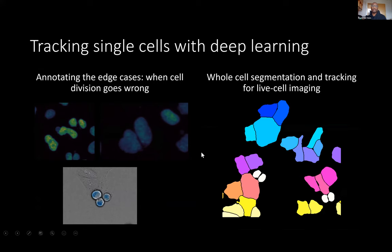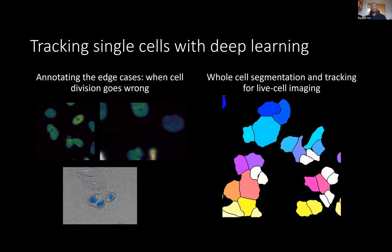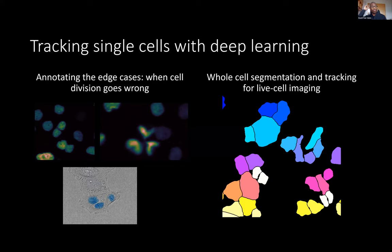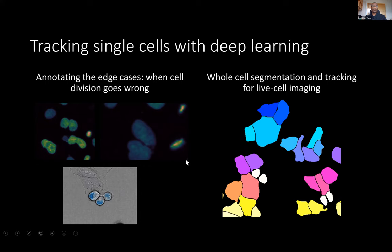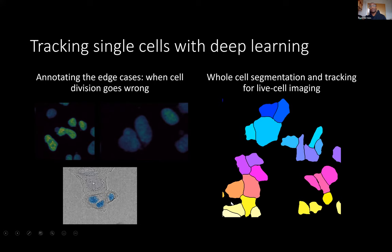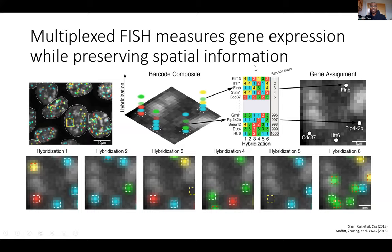Currently we're working on two different things. One is making sure we're annotating the edge cases — the textbook story of one cell turning into two is not what you see when you're imaging transformed cell lines. With live cell imaging, sometimes you'll have one cell turn into three, or one cell turn into two then back into one then into two or three. Making sure our annotation framework is robust enough to handle these edge cases is one thing we're working on. We're also working on pipelines that can do both whole-cell segmentation and tracking using label-free imaging modalities like phase microscopy.